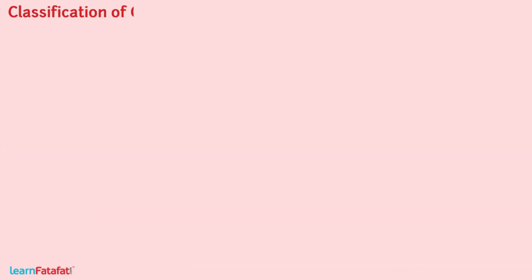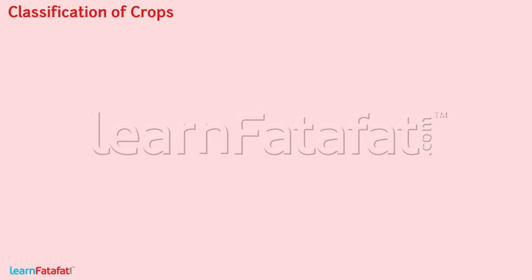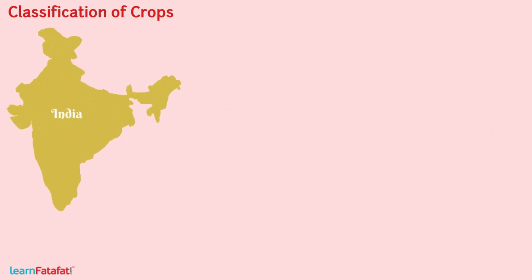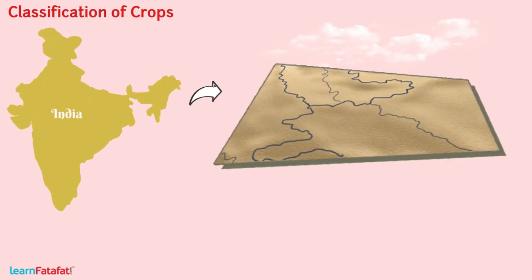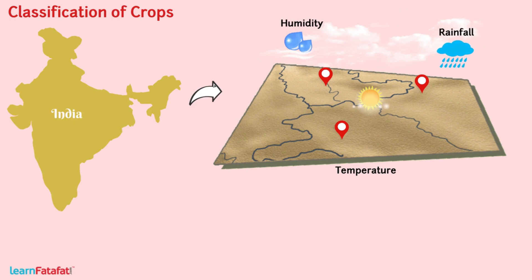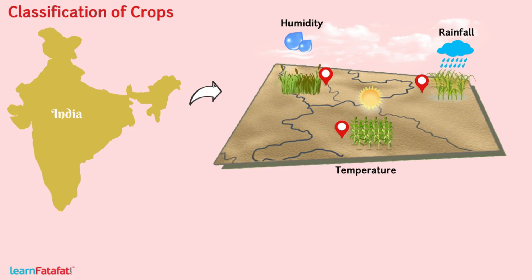Classification of Crops. We all know that India is a very big country. Here, from region to region, we can find different climatic conditions like temperature, humidity, and rainfall. Since different crops require different climatic conditions for their growth, we can find a variety of crops from region to region.